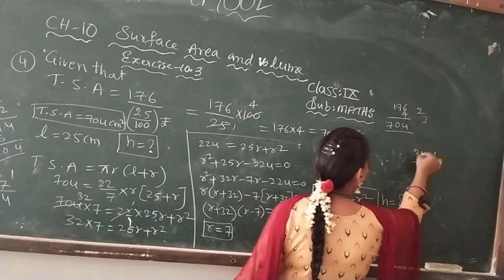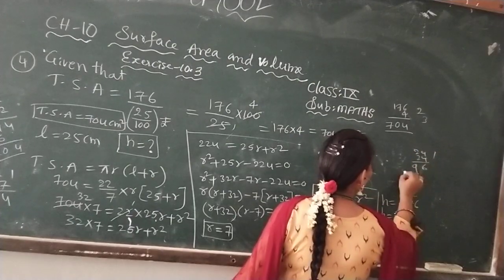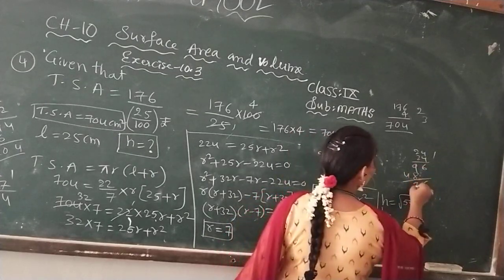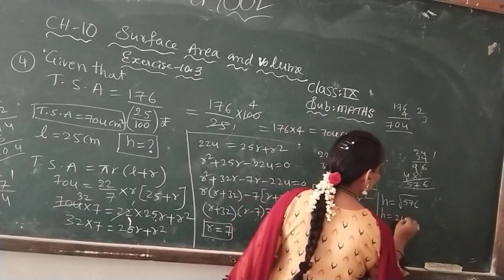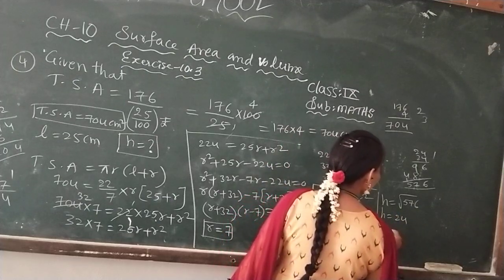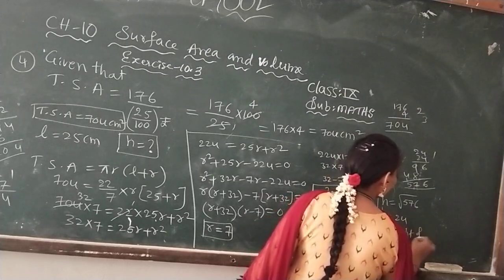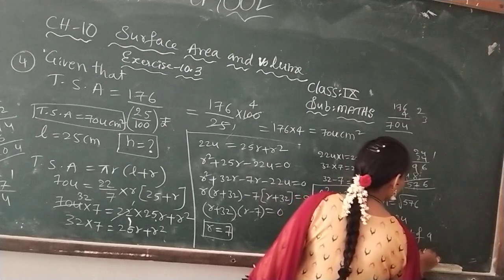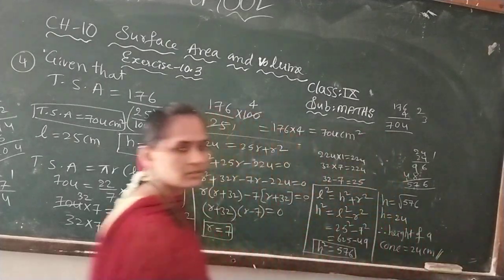24 squared equals 576. Therefore, height equals 24 cm. This is the answer.